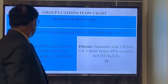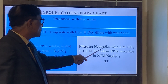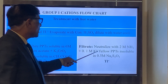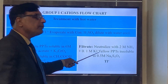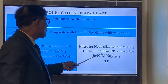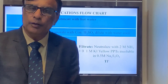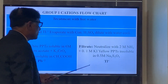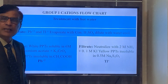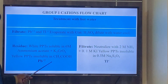For the filtrate of this residue, neutralize with 2 molar ammonia, then add 0.1 molar KI. If it gives yellow precipitates that are insoluble in 0.5 molar Na₂S₂O₃, then thallium is confirmed. This is the specific test for thallium, and the previous step is the specific test for lead (Pb).